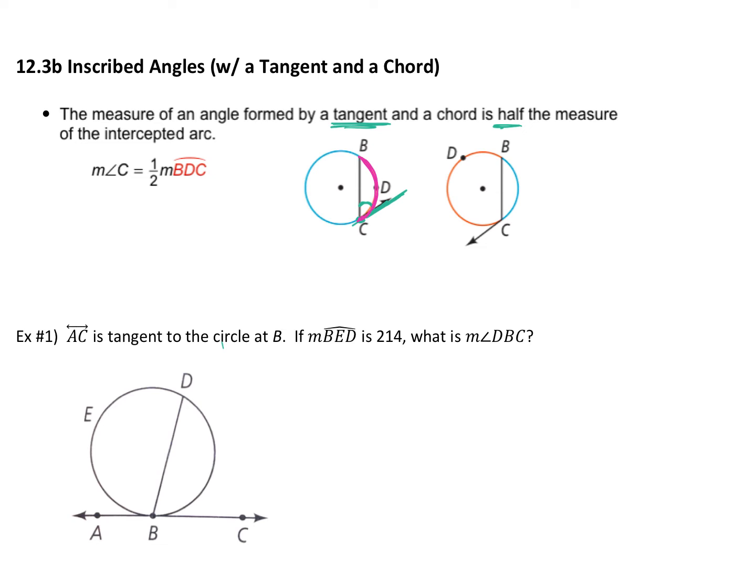So this right here is tangent, meaning it hits only at point C, but it's still going to be that this angle is half of the arc. So your arc right now is this arc. Notice the arc ends at your vertex now, but it's the exact same thing.